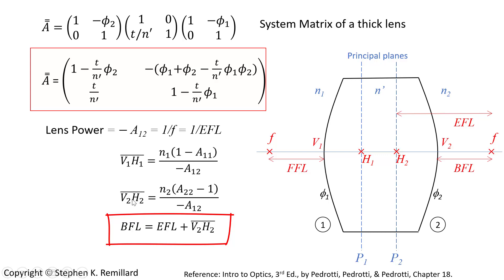V2H2, the line over it means the distance from vertex 2 to principal plane 2. So in this illustration here, it's a negative number. And so that's why the back focal length can be shorter than the effective focal length. And the front focal length following the same principle. Now the principal planes could be inside the glass or outside the glass, and so these VH distances can be positive or negative.